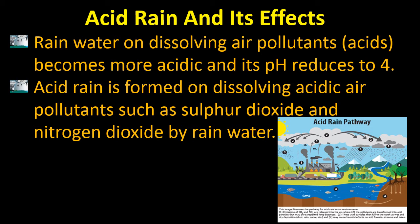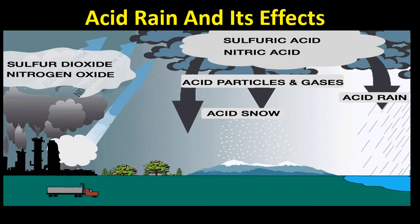For carbonic acid, the pH is from 5.6 to 6, but pH 4 is quite acidic. Acid rain is formed on dissolving acidic air pollutants such as sulfur dioxide and nitrogen dioxide in rain water. Acid particles and gases ultimately change into acid rain and acid snow.